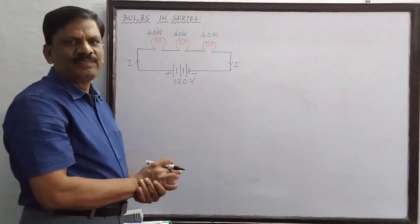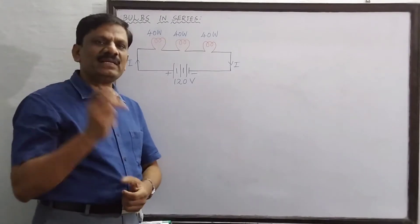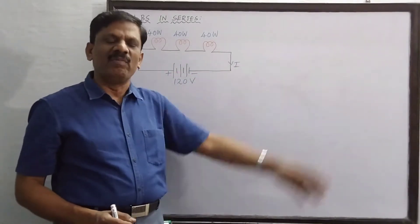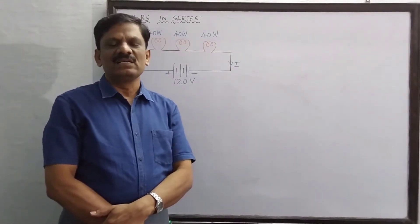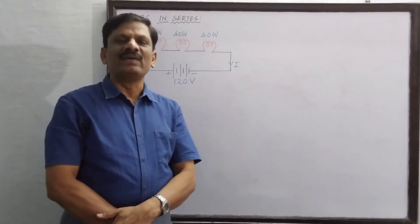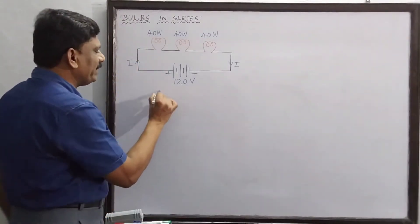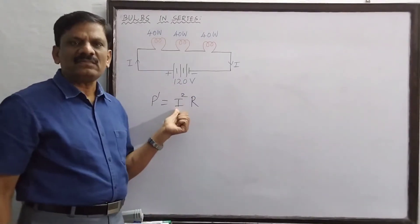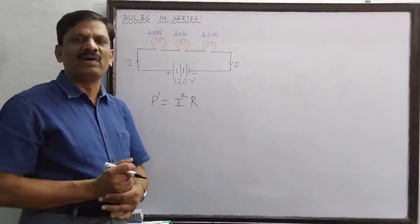If you add one more bulb or two more bulbs — each bulb has a filament and the filament has a resistance — as we increase the number of bulbs, the total resistance of the circuit increases. As a result, the net current in the circuit decreases. As the current decreases, the power dissipated in each bulb, given by P' = I²R, decreases, so the brightness of the bulb decreases.